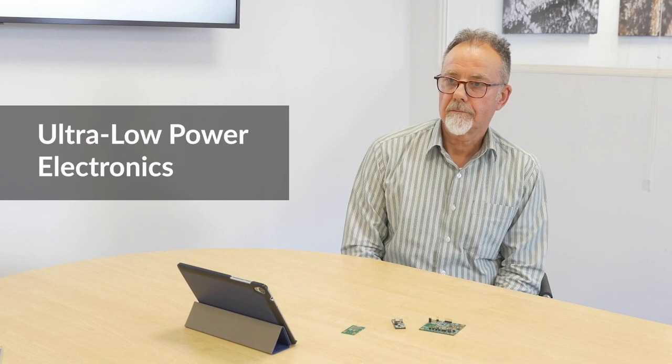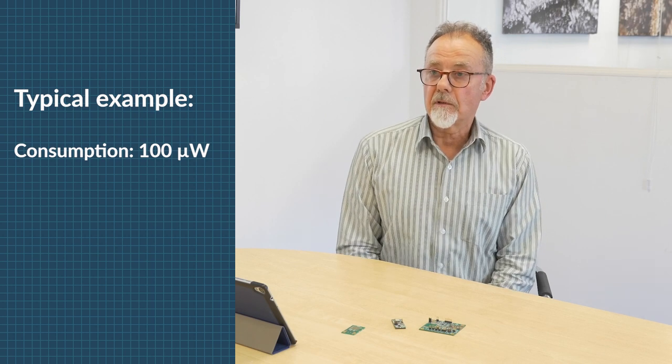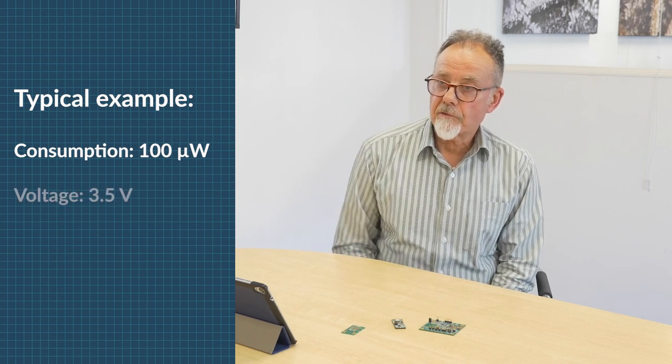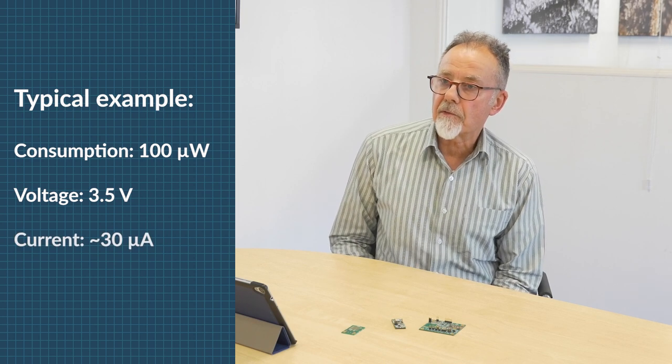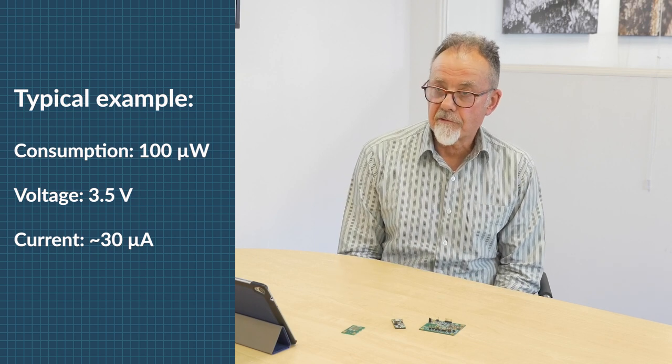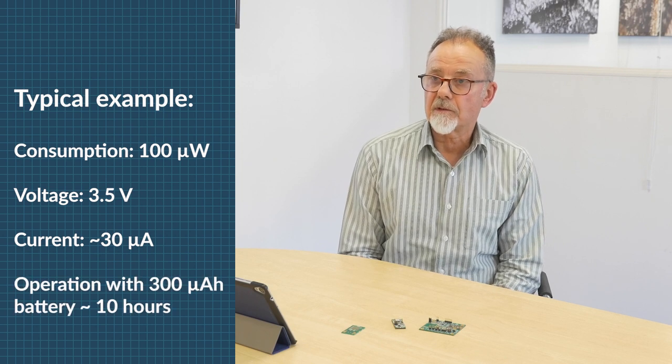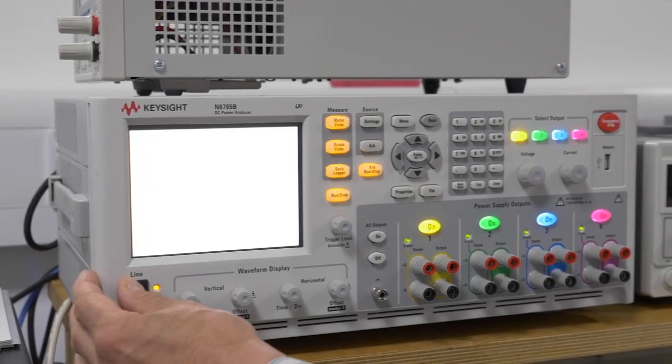So what do we mean by ultra-low power? Well, what we mean in Ilica by ultra-low power is something in the range of 20 µW to 100 µW. If we think about a device consuming 100 µW, for example, at an average voltage of 3.5 volts, that's going to be consuming a current of around 30 µA. So 30 µA with a 300 µAh battery is going to last you 10 hours. If we consume less current than that, obviously it's going to last a bit longer.